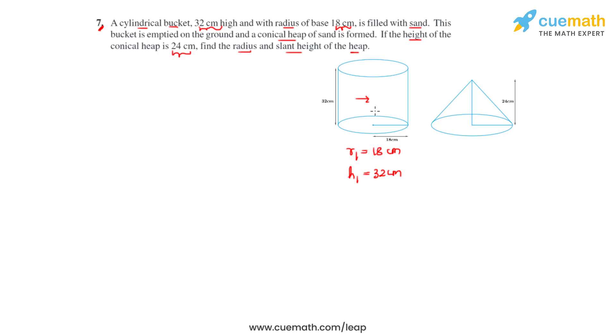The volume that this bucket had was transferred onto the ground and that sand formed a conical heap which has got a height h2 to be equal to 24 centimeters, but we do not know its radius, let's say r2, and its slant height, and that is what we have to find.